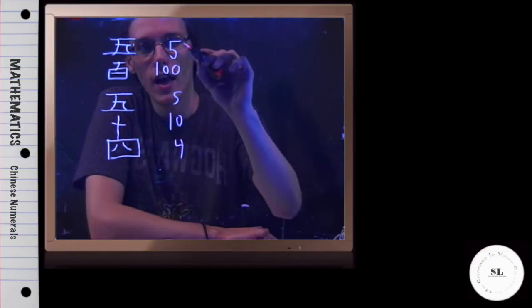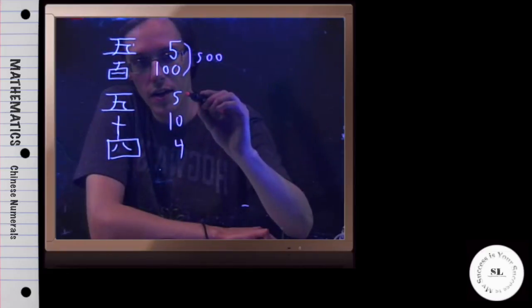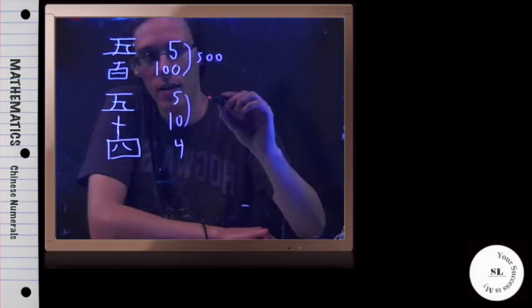So, these groups right here would be 5 times 100, or 500. This right here would be 5 times 10, or 50.